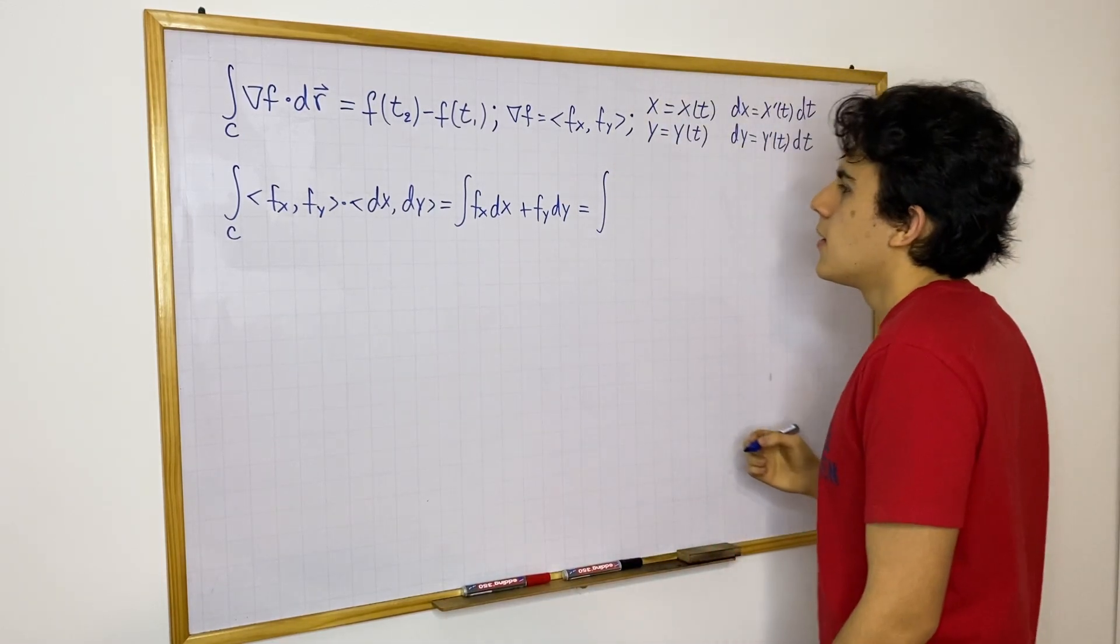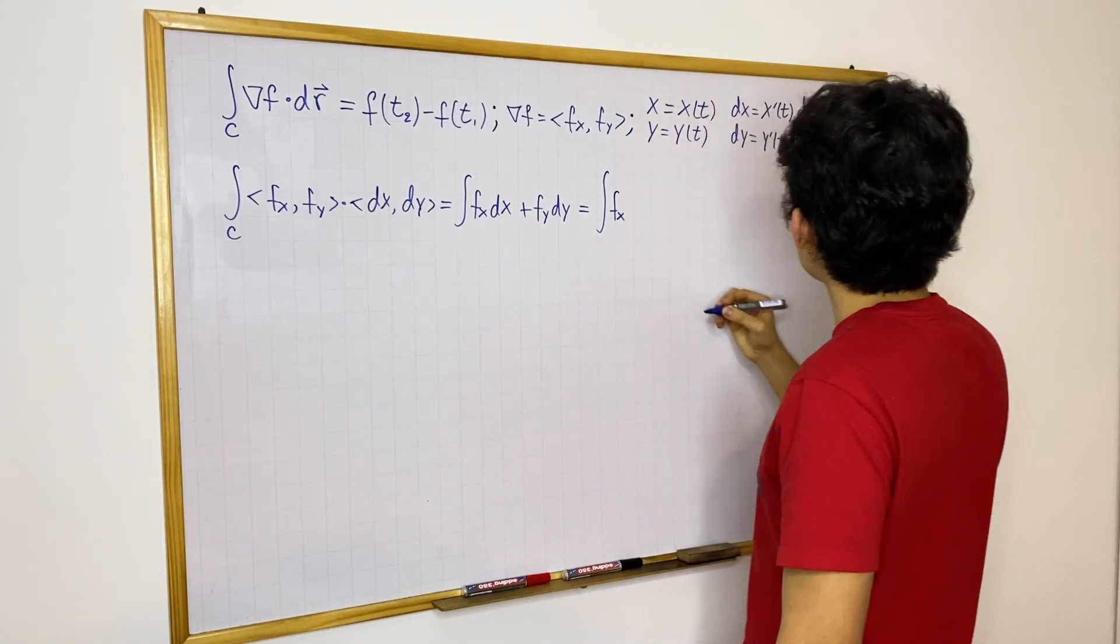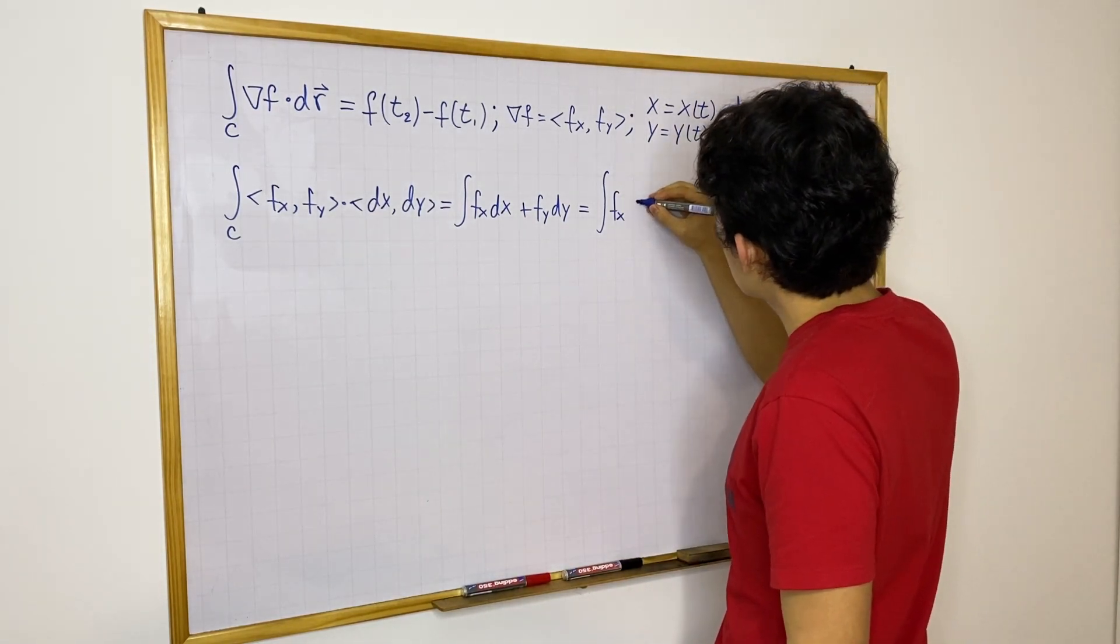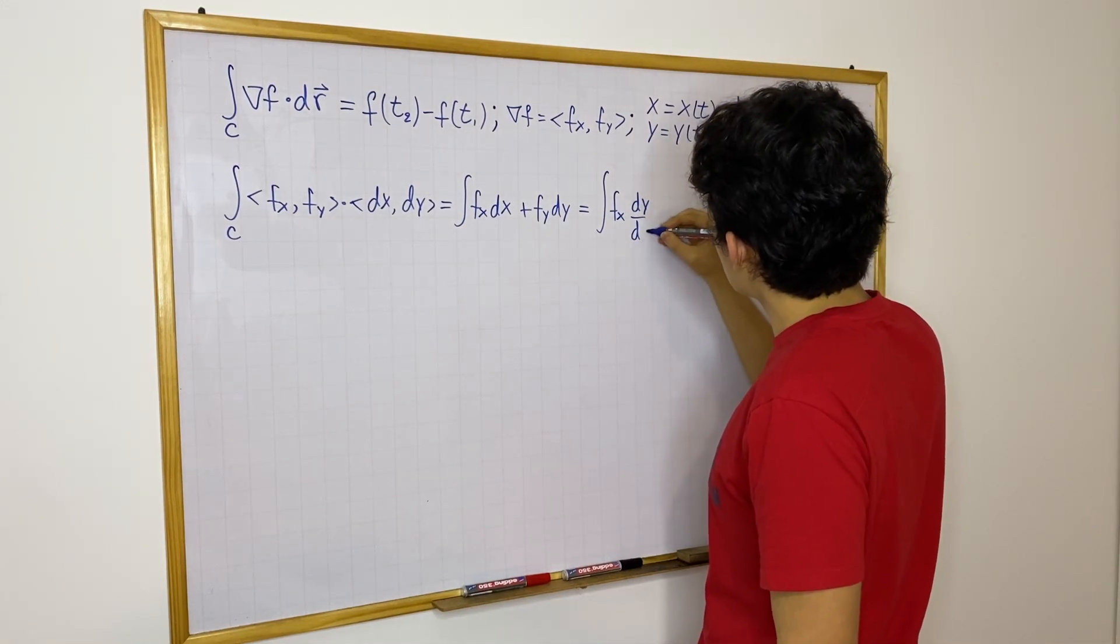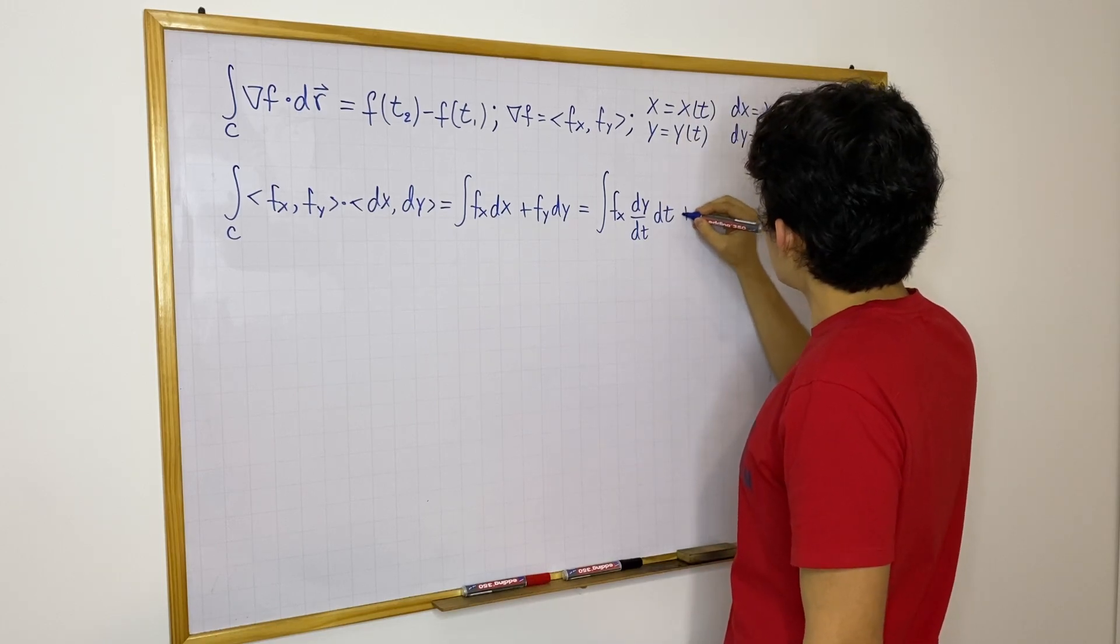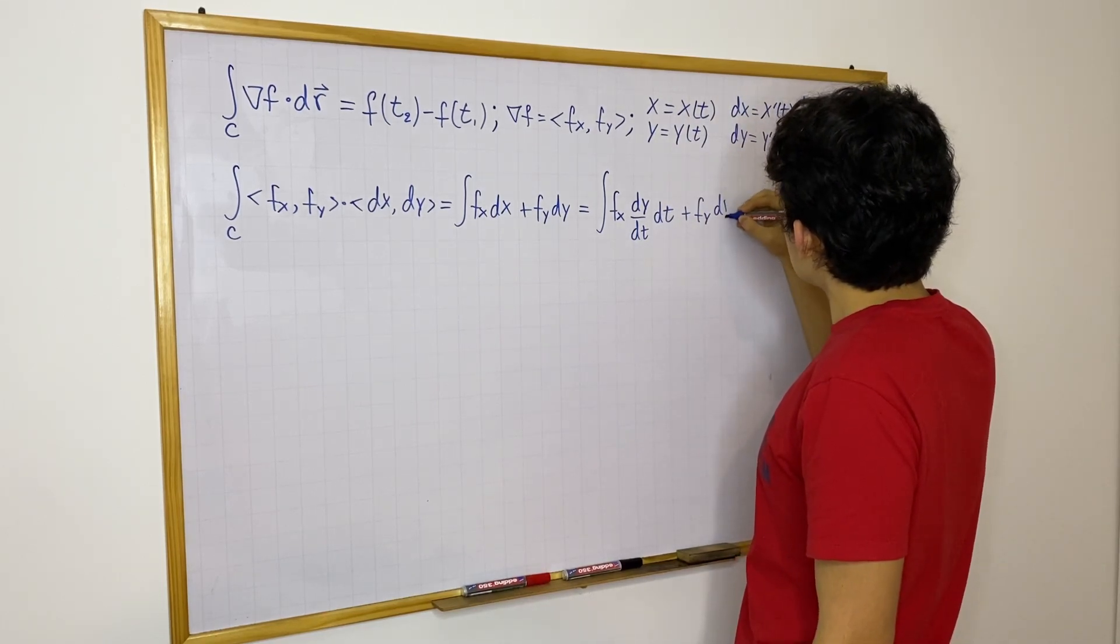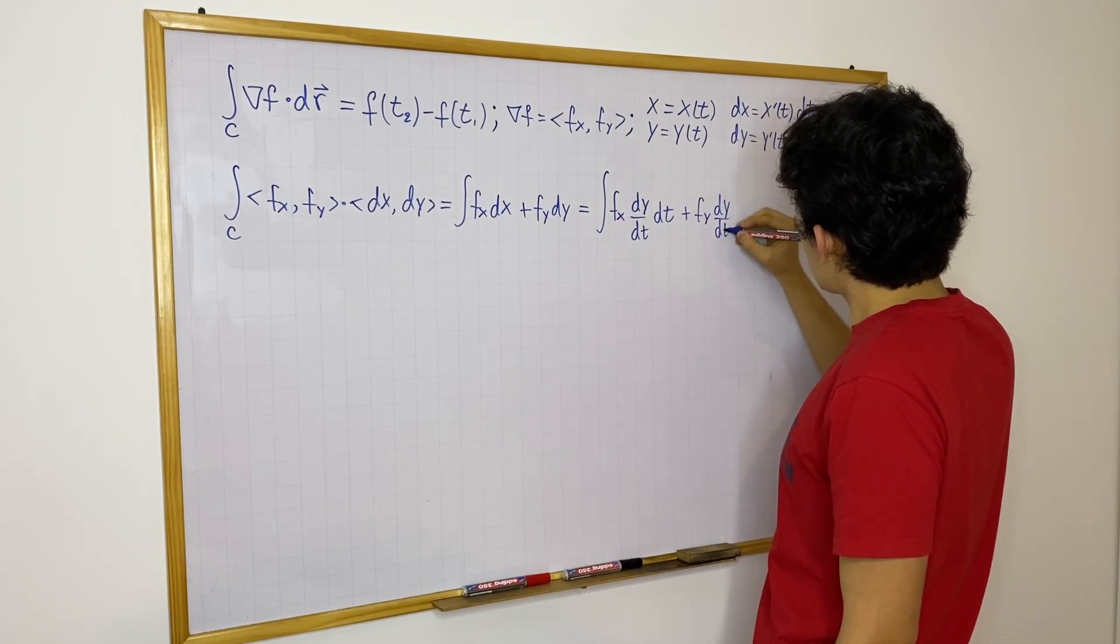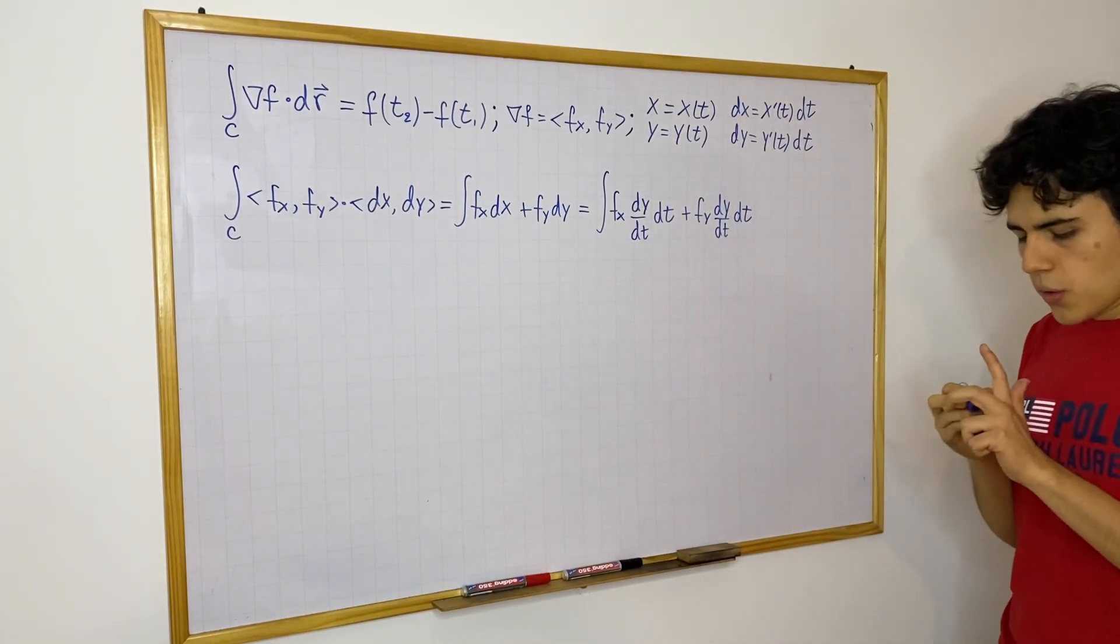f_x, f sub x times dx, that is going to be equal to dx/dt times dt plus, and then we have f sub y dy/dt dt. So this is what we now have.